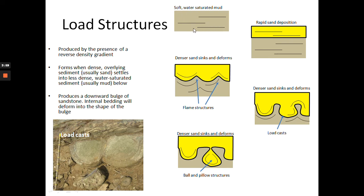Initially you have a sea floor dominated by soft, water-saturated mud. Then a gravity flow or storm brings lots of sand, rapidly forming a bed on top of the soft muddy substrate. Sand is dominantly quartz, which has a higher specific gravity than clay. Because the clay below is still soft, the sand starts to sink, resulting in deformation of the muddy substrate below.